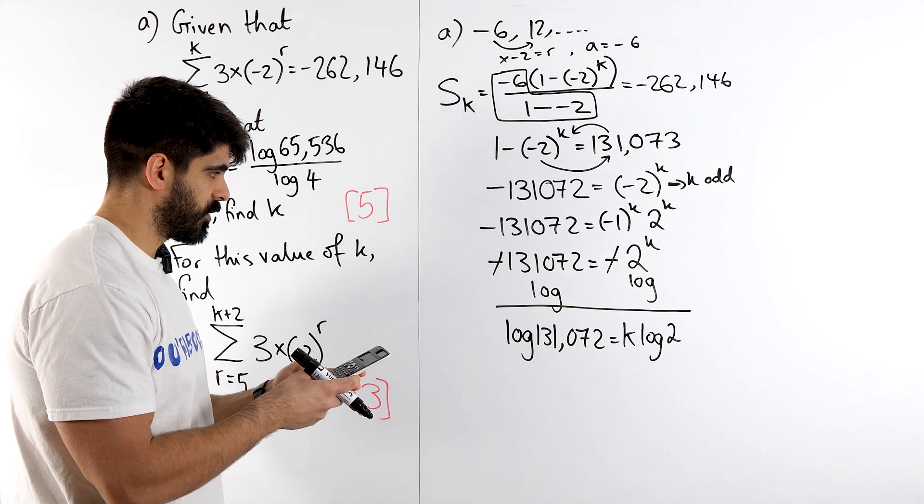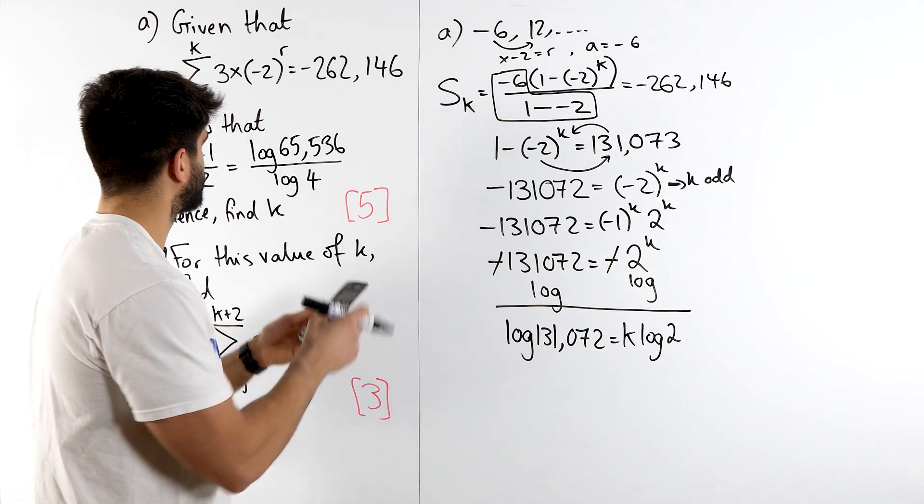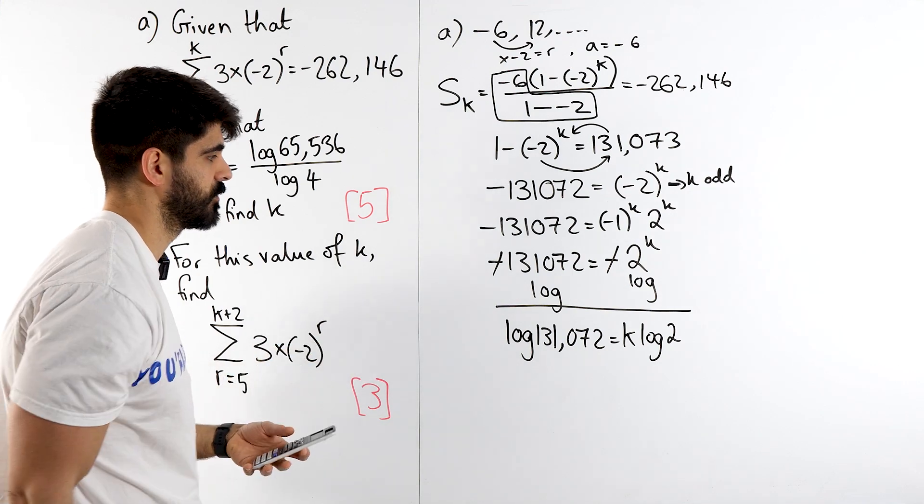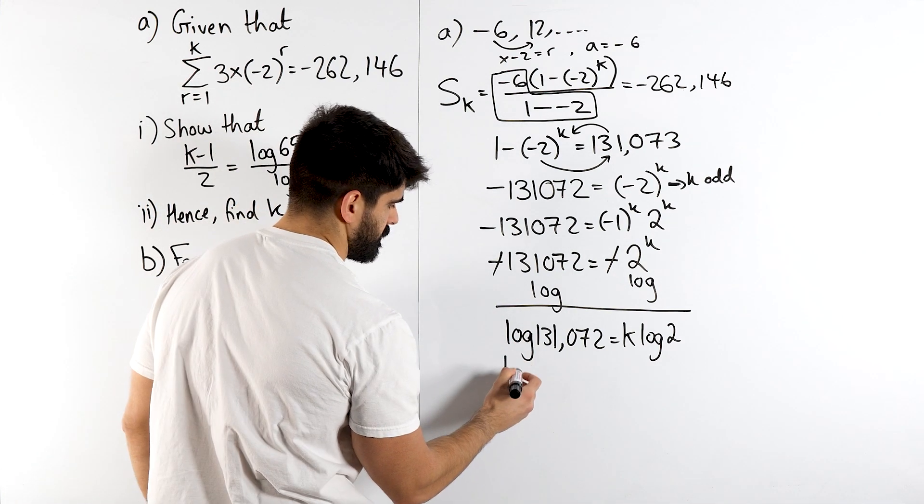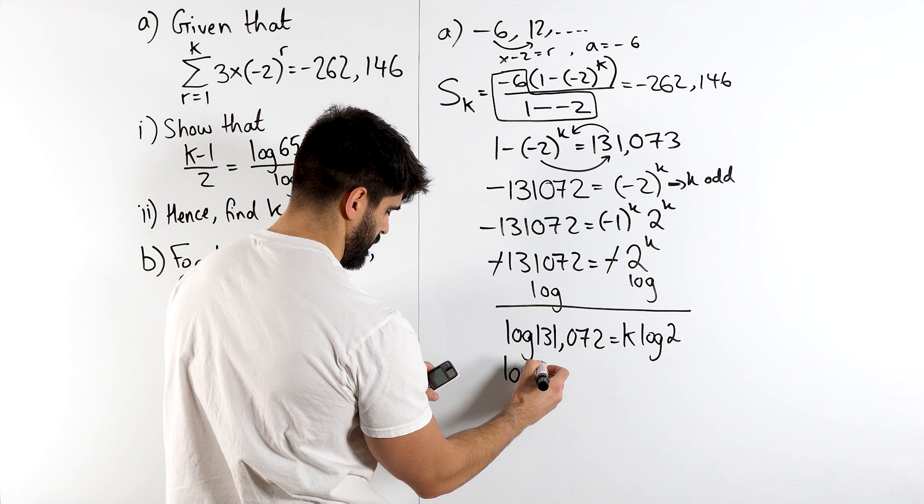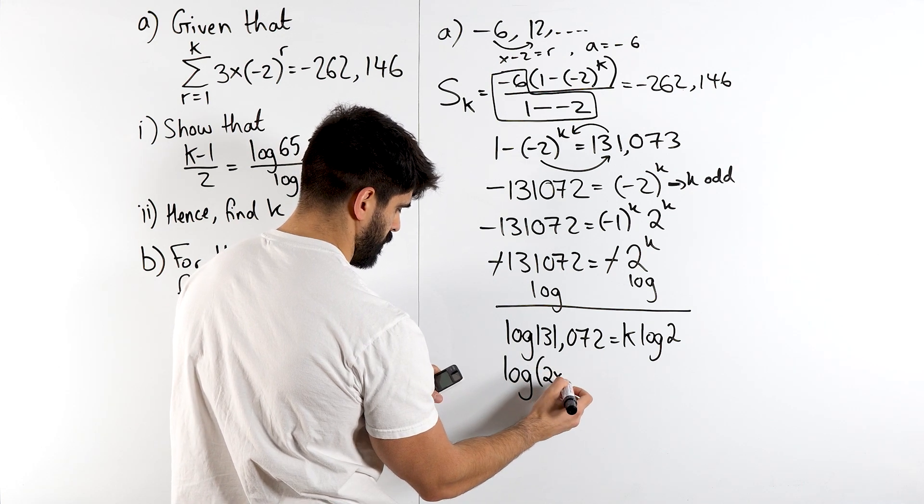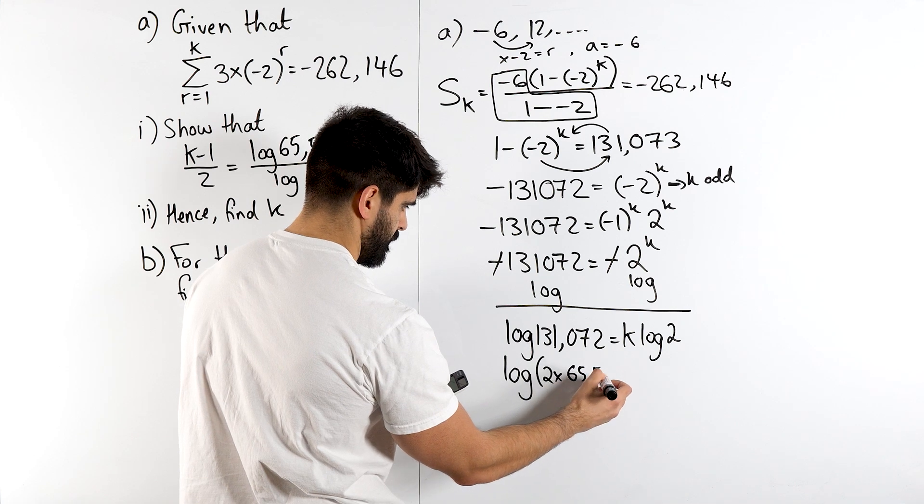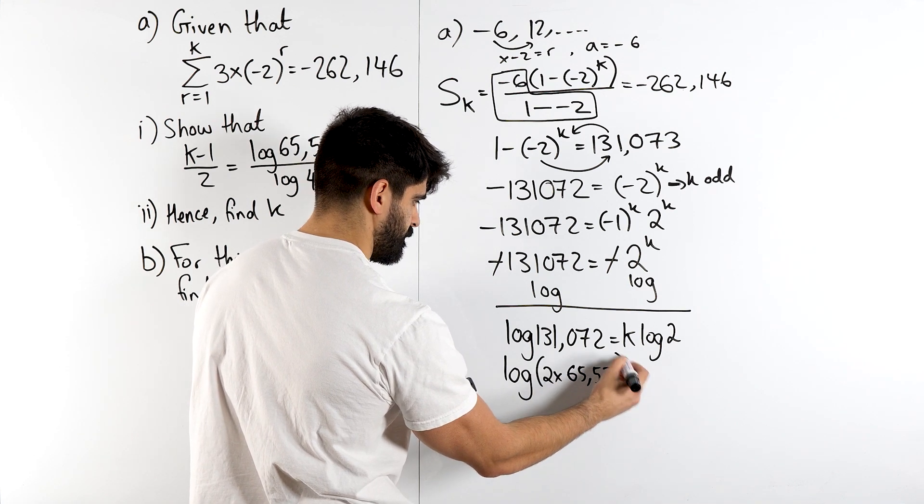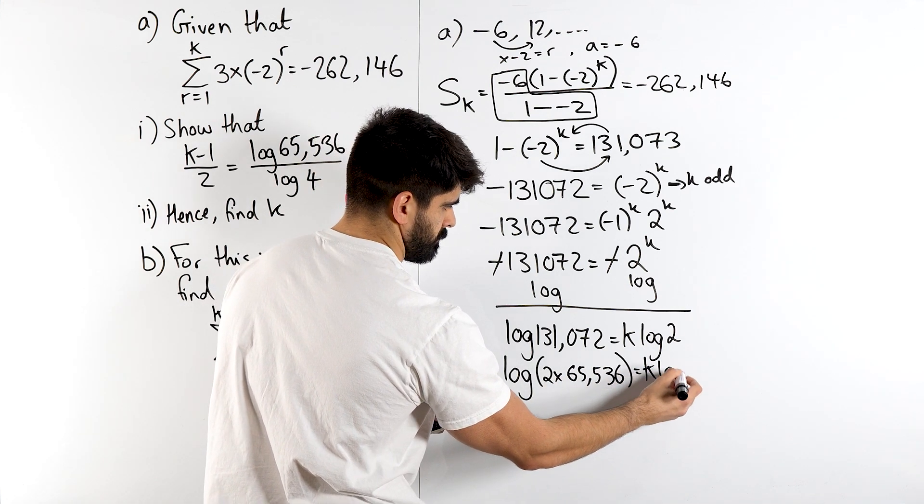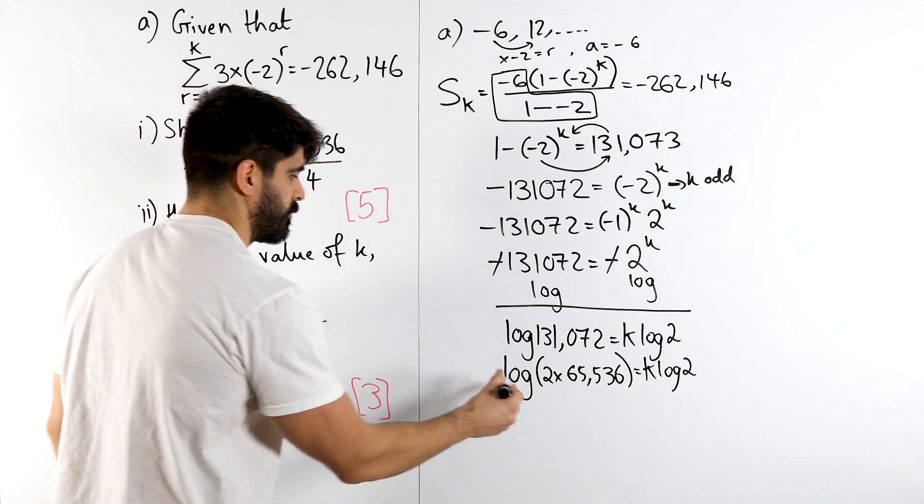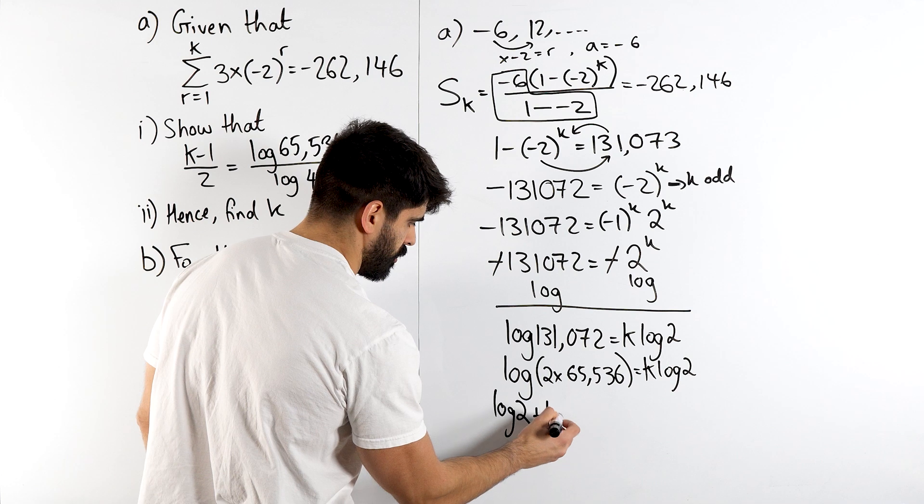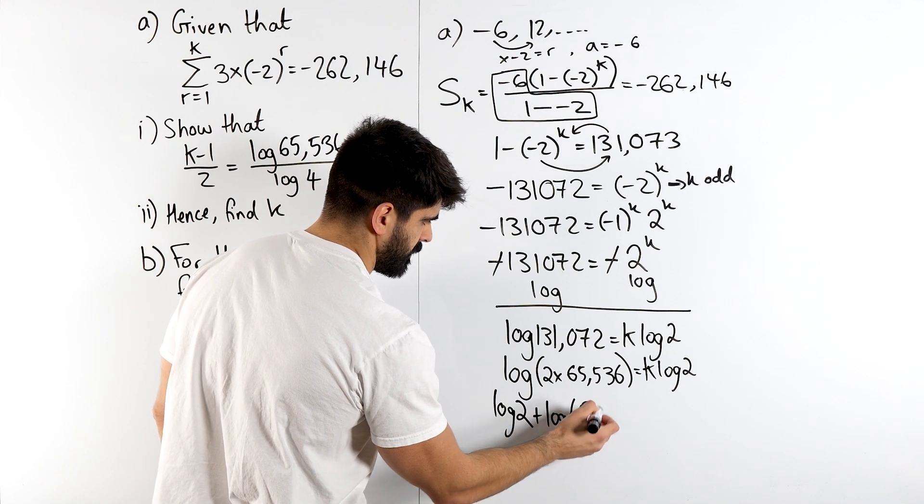Now 131,072, if I divide that by this to just see how they relate to each other, I get 2. So this is 2 lots of 65,536. Because then we can split that up, right?